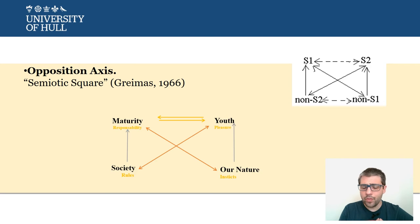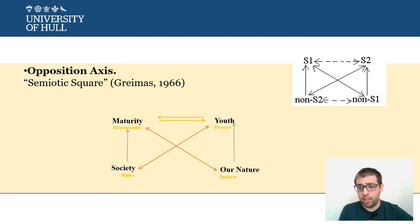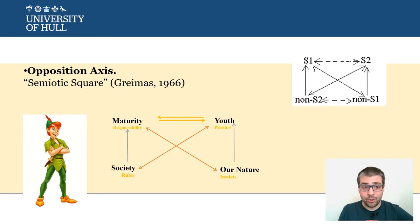Think about Sonic the Hedgehog — Sonic is young, fast, sporty, impulsive maybe. And then you have the enemy Robotnik, who is supposed to be intelligent, obviously old, fat. So there is here the definition of two characters precisely in relation to their opposition. Another classic example: think about Peter Pan versus Hook, for example.